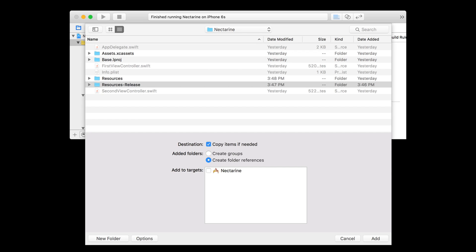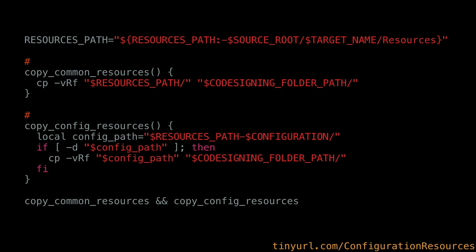Another good thing I might be able to quickly show — if there's time at the end or if you can see me later — is you can output all the environment variables available to your build script and figure them out from there. You can kind of reverse engineer it and say, 'all my compiled Swift code gets put in this directory before it gets put into my application.' So if you wanted to modify your compiled Swift code for some reason, that's where you'd look.